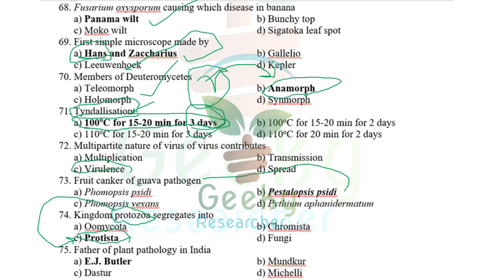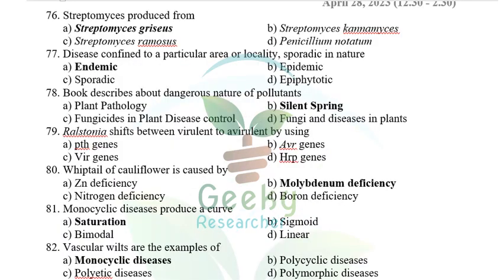Father of plant pathology in India — E.J. Butler is the father of both plant pathology and mycology in India. Streptomycin is produced from (isolated from) the bacterium Streptomyces griseus, discovered by Waksman, who received the Nobel Prize in 1952.